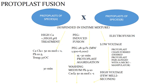In protoplast fusion, protoplasts of species A and B are suspended in enzyme mixture with high calcium and high pH treatment. For PEG-induced fusion: calcium chloride plus pH 10.5, temperature 37°C for 30 minutes; PEG is taken at 28–50%. Washing medium is maintained at pH 9–10. For electrofusion, low voltage maintains a protoplast chain; desired protoplast pairs are aligned with a micromanipulator, then high voltage for a few milliseconds achieves fusion.